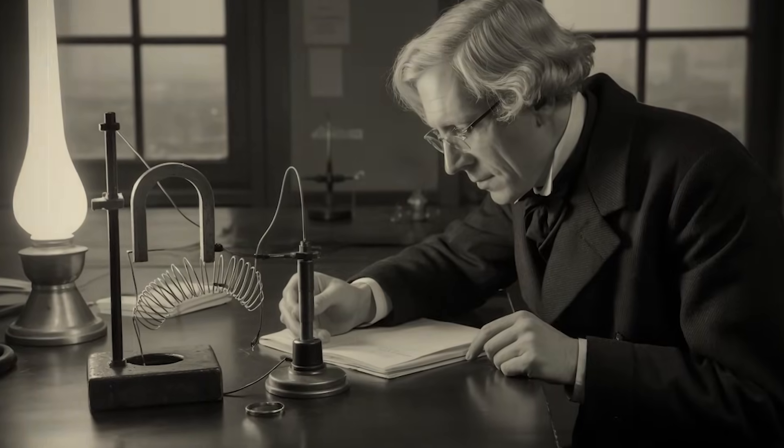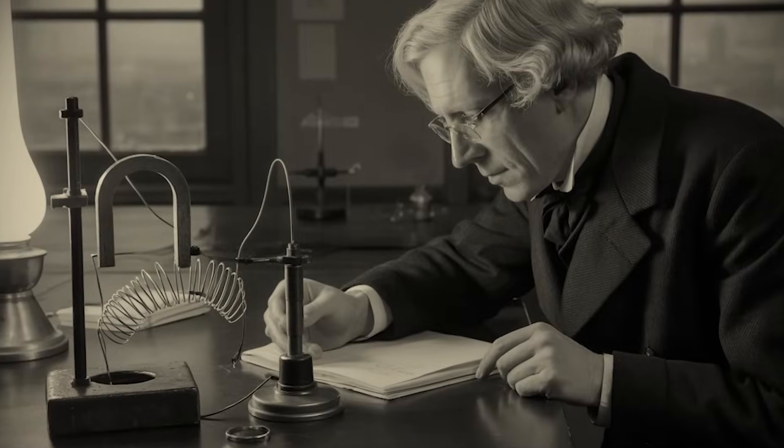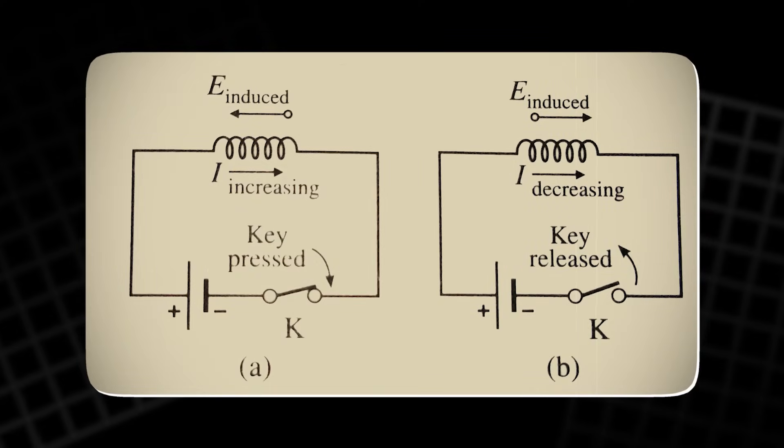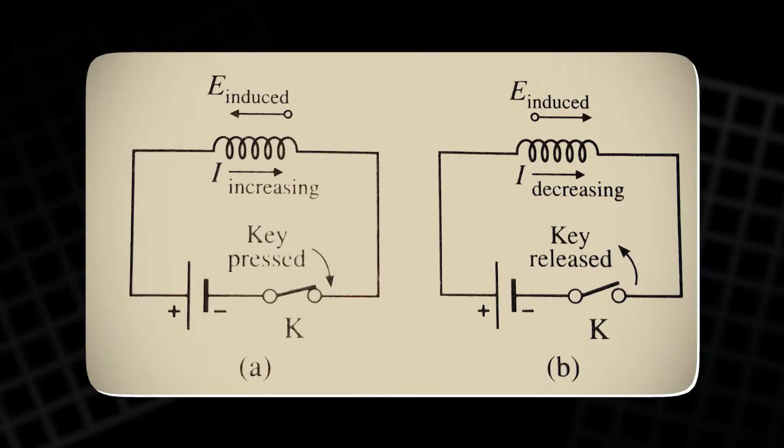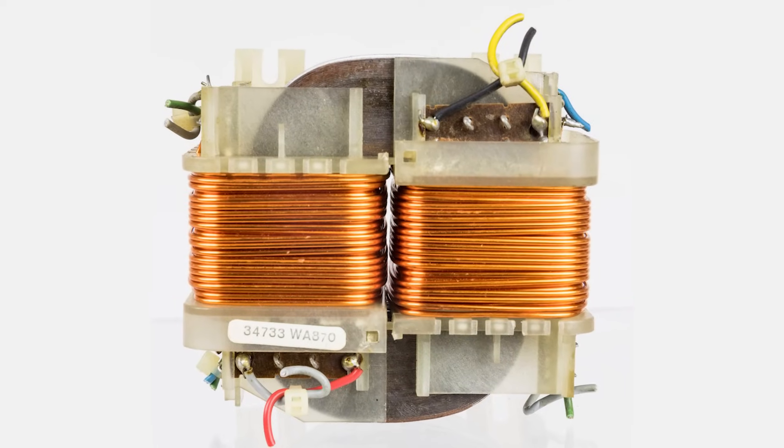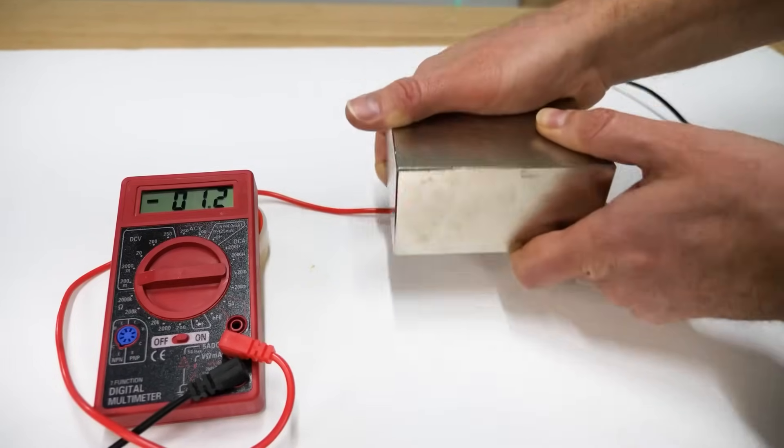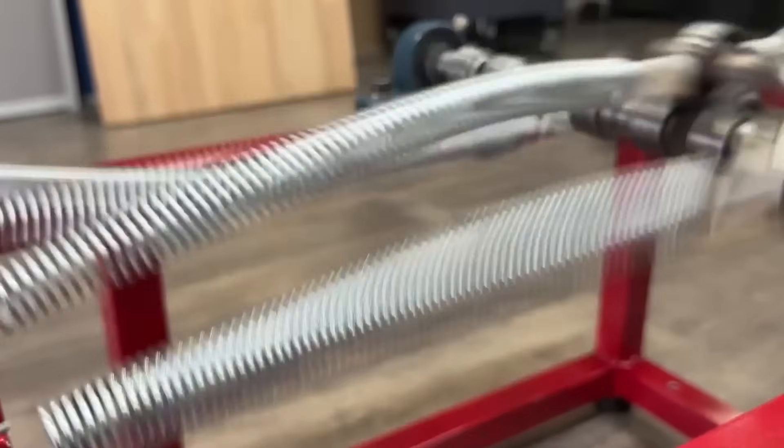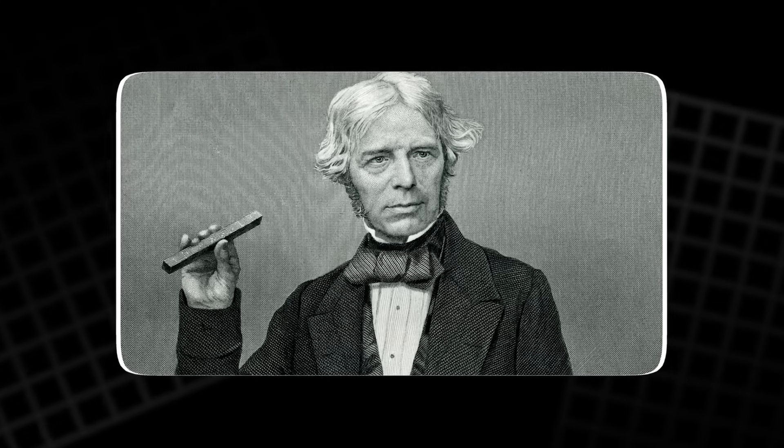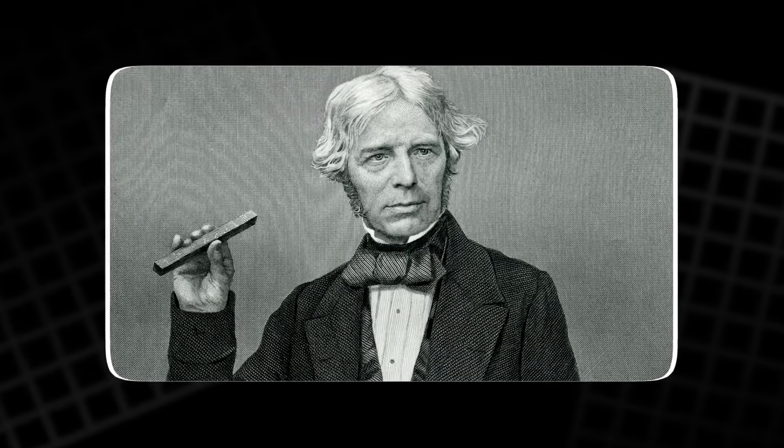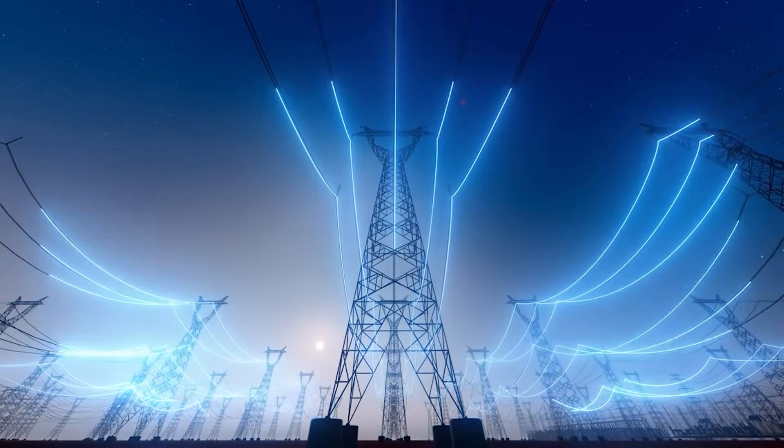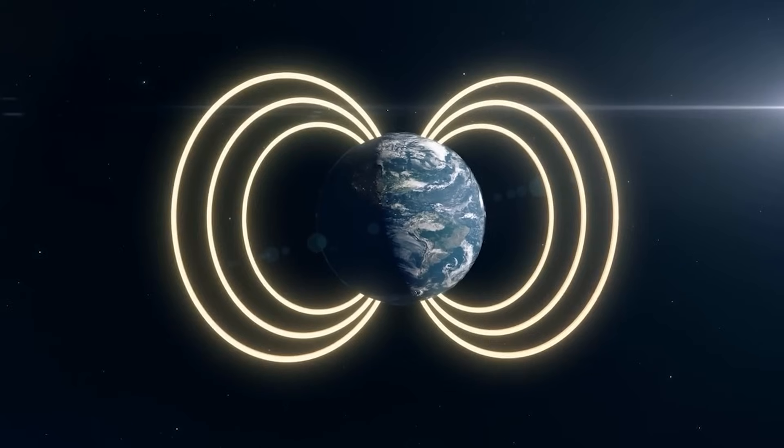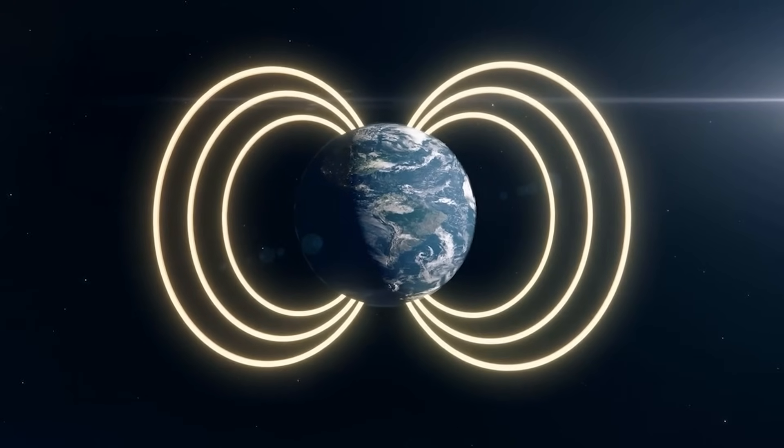As Faraday continued to experiment, he discovered more about the behavior of electric and magnetic fields. He uncovered the principles of self-induction and mutual induction, which formed the basis for the development of transformers. These discoveries paved the way for the widespread use of electricity in industry and society. However, Faraday's work also raised even more profound questions. What exactly was causing the induction of the current? Where was this energy coming from, and why was it able to travel through space without any apparent medium?